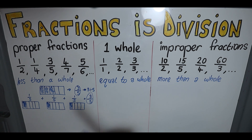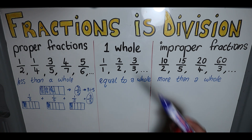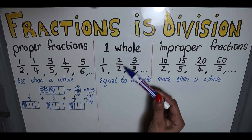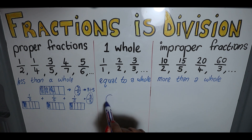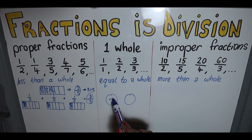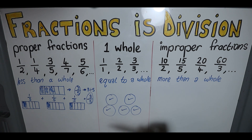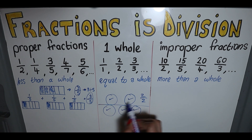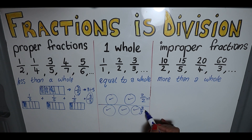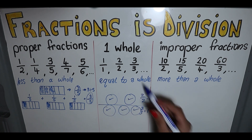What does it mean when your answer is equal to a whole? In division we are sharing. If I have two chocolates and share between two friends — one for you and one for you — each one gets one. Or three friends and three chocolates — one for each. Each one gets one, so the answer is always one. This means there's just enough for everybody in the group. Two divided by two, each gets one. Three divided by three, each gets one. That's what happens when your answer equals a whole.